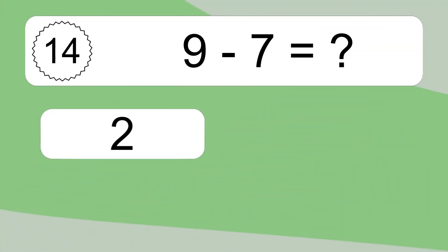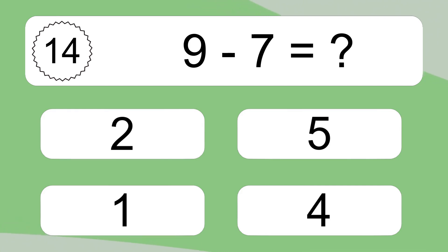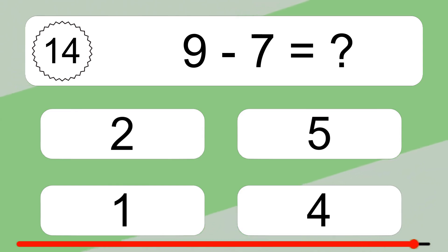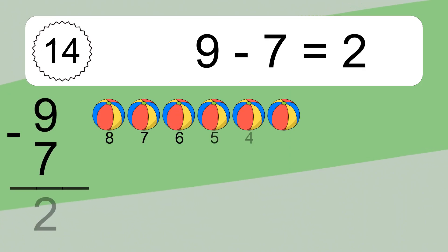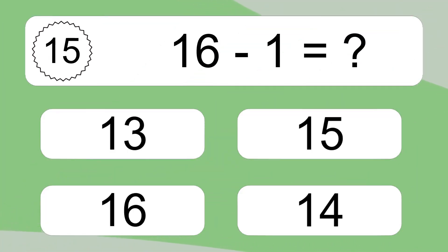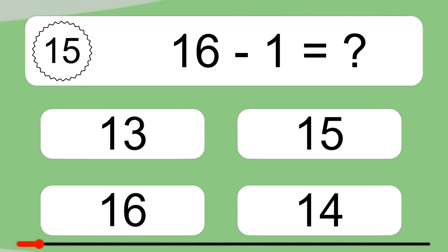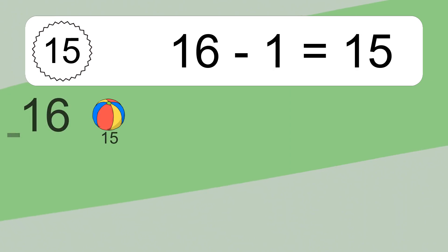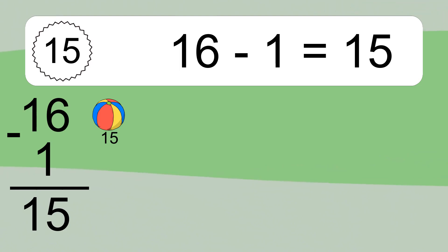9 minus 7 equals what? 9 minus 7 equals 2. Let's count it: 8, 7, 6, 5, 4, 3, 2. 16 minus 1 equals what? 16 minus 1 equals 15. Let's count it: 15.